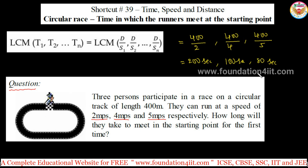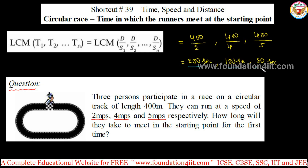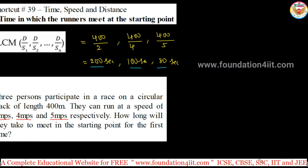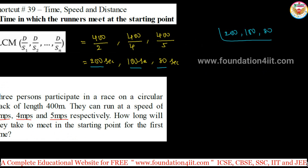After how much time will they meet together? We just find the LCM of T1, T2, T3. These three numbers are 200, 100, and 80. We find out the least common multiple — that is the answer.